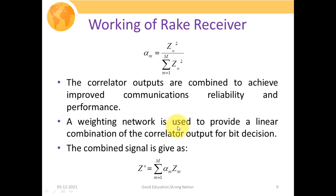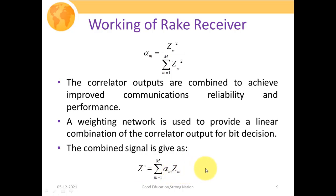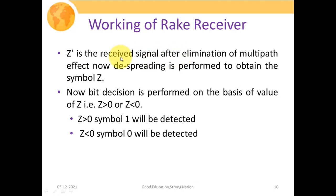A weighing network provides the linear combination of correlator outputs for a bit decision. The combined signal Z prime is given by the sum from M=1 to M of alpha_M · Z_M — that is, Z prime = alpha1·Z1 + alpha2·Z2 + alpha3·Z3 + ... + alphaM·ZM. Z prime is the received signal after elimination of the multipath effect, achieved by giving high weight to high-SNR components and low weight to those with lower SNR.